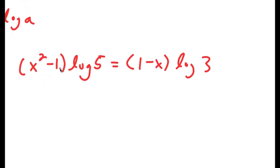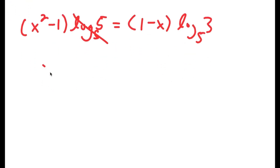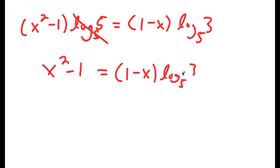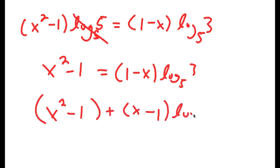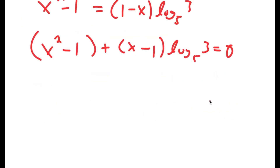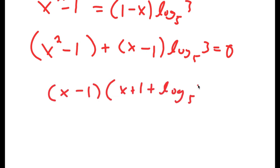Now I'm going to take base 5 on both sides of both logs, so these cancel out to get 1. So now I have x squared minus 1 is equal to 1 minus x times log base 5 of 3. This means that x squared minus 1 plus x minus 1 times log base 5 of 3 is equal to 0.